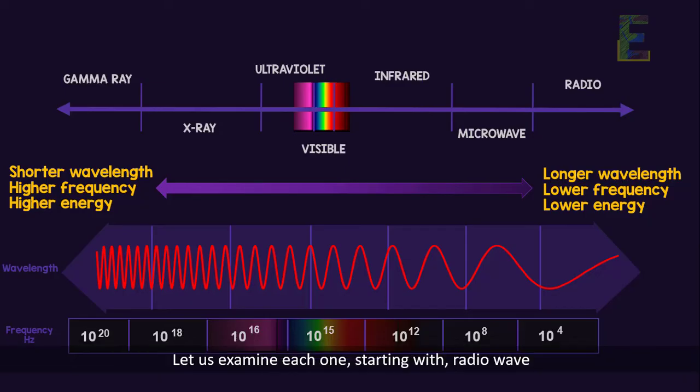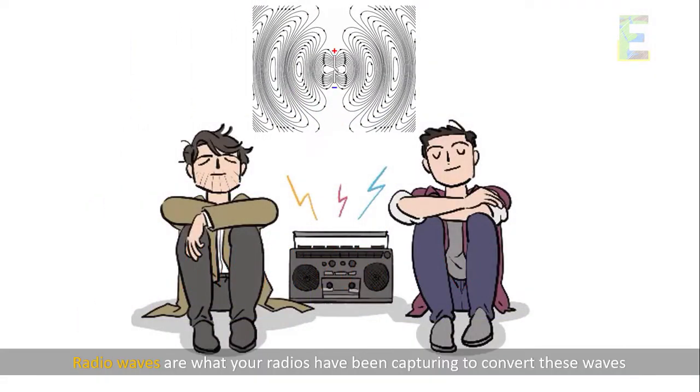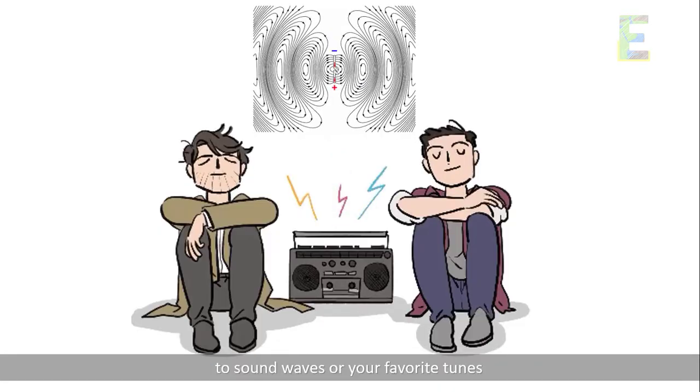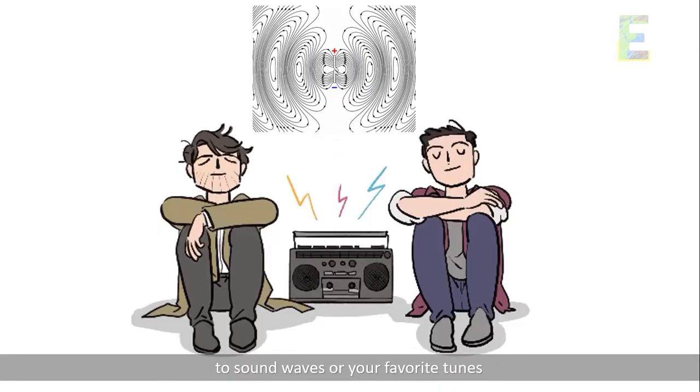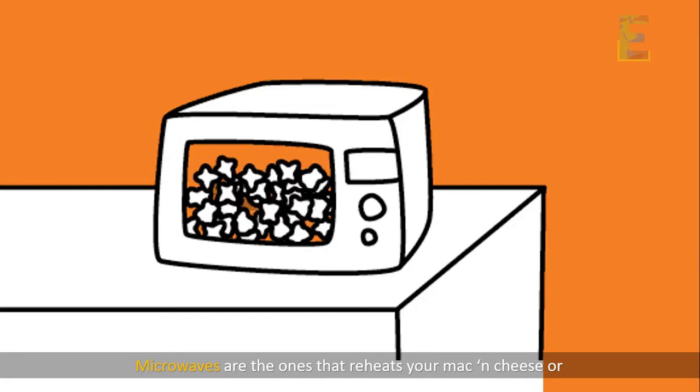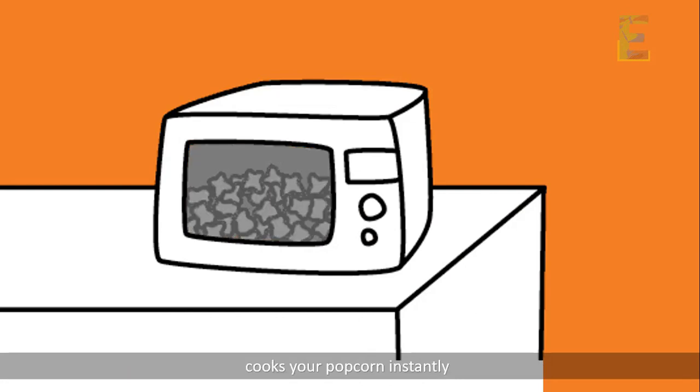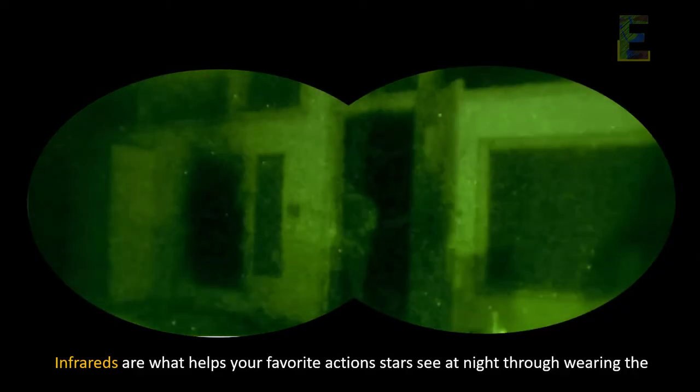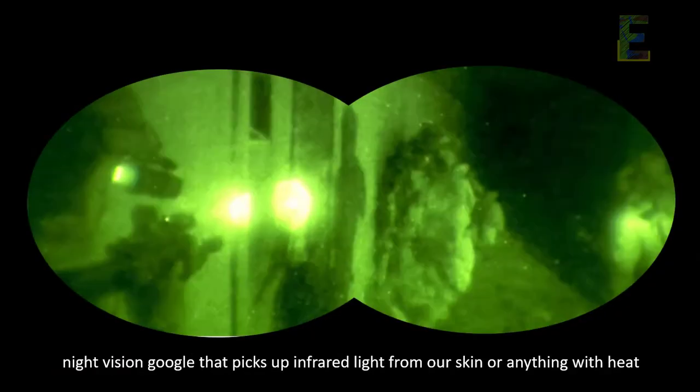Radio waves are what your radio has been capturing to convert these waves to sound waves or your favorite tune. Microwaves are the ones that reheat your mac and cheese or cook your popcorn instantly. Infrareds are what help your favorite action stars see at night through wearing the night vision goggle that picks up infrared light from our skin or anything with heat.